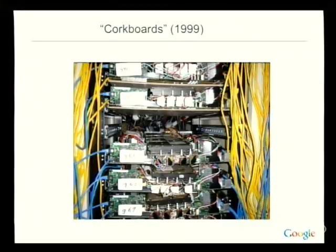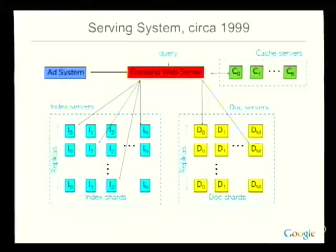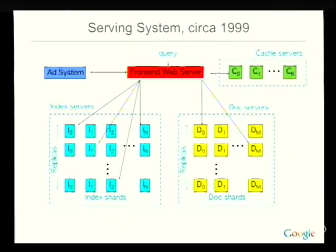The system in 1999 looked pretty similar to the original research project, except it had grown a bit. The first thing I worked on when I showed up at Google was they said we need an ad system. You can view the advertising system as really another form of information retrieval with additional constraints like budgets for advertisers and cost-per-click metrics.